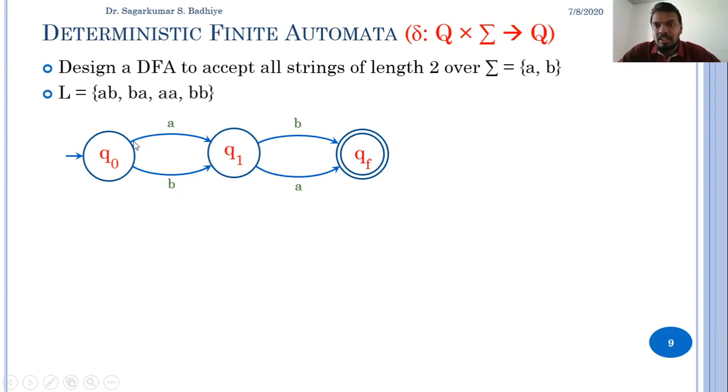Here you can see that from q0 whenever there is a as input I am always going to state q1. In the same way, from q1 whenever I get input a or b, I will go to qf. This is fixed, therefore this is called a deterministic finite automata.